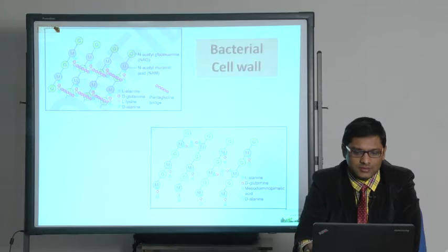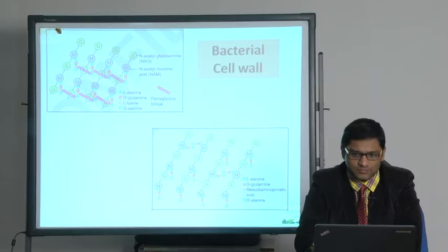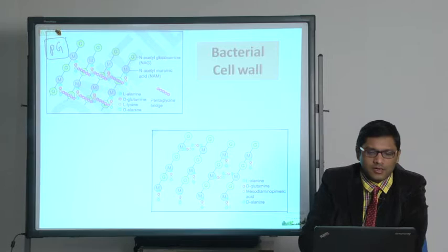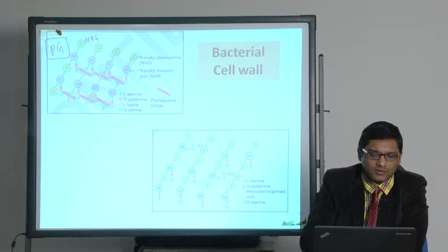Next is the differences between a gram-positive and a gram-negative bacterial cell wall, especially the peptidoglycan. When you look into the peptidoglycan layer, it is composed of alternate NAG and NAM molecules. NAG is N-acetyl glucosamine, NAM is N-acetyl muramic acid.